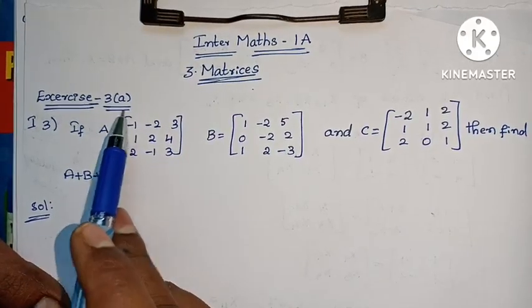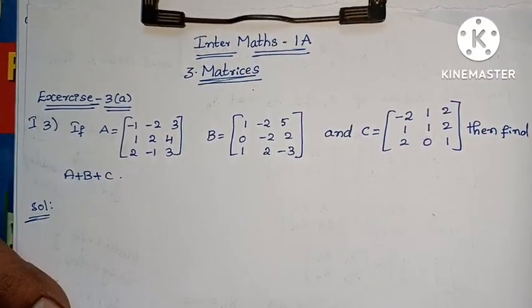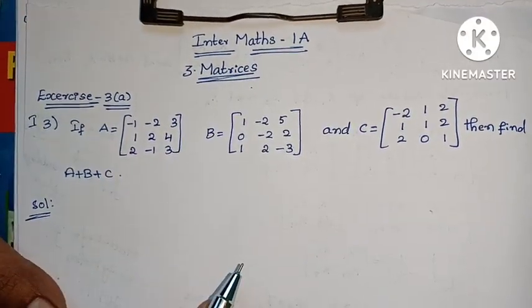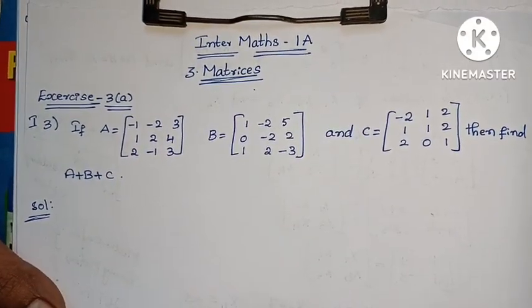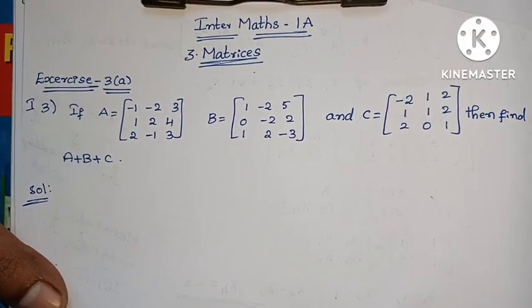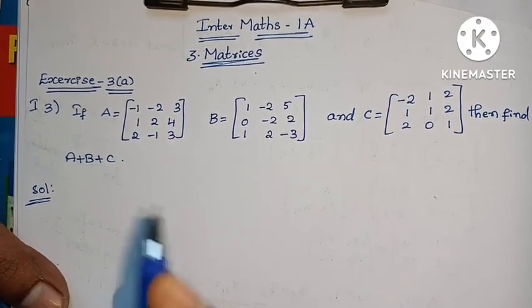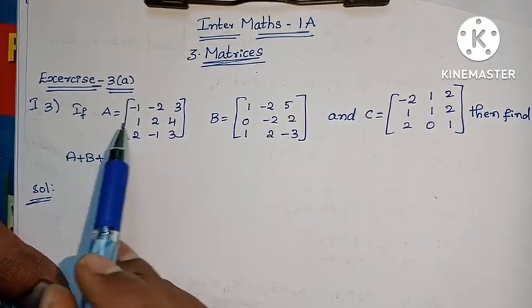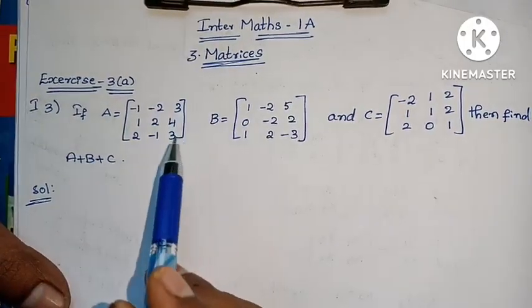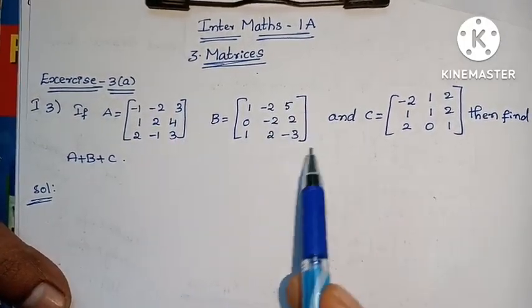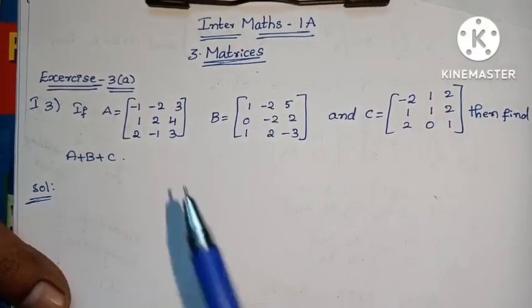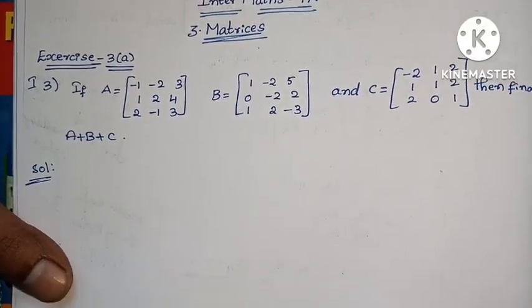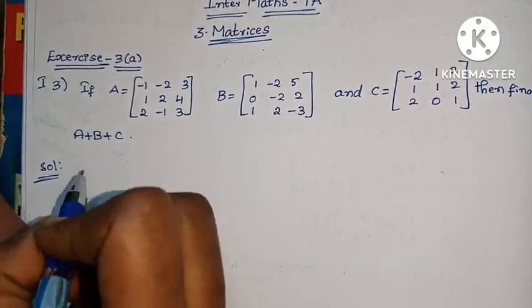X is 3, first row second problem — we will complete this problem in this video. Question: if A equals to a matrix, B equals to a matrix, and C equals to a matrix, then find A plus B plus C.